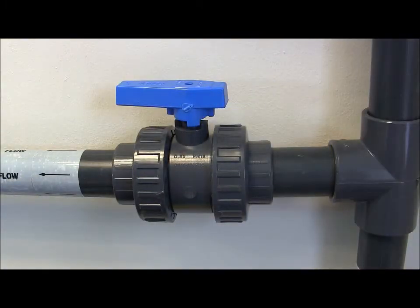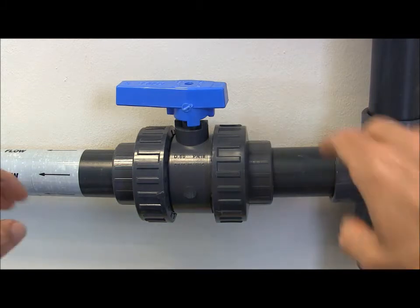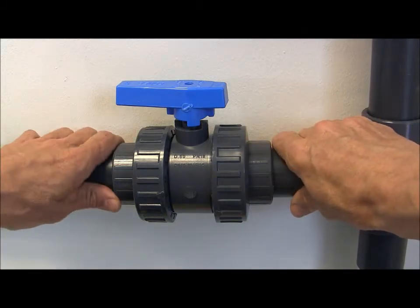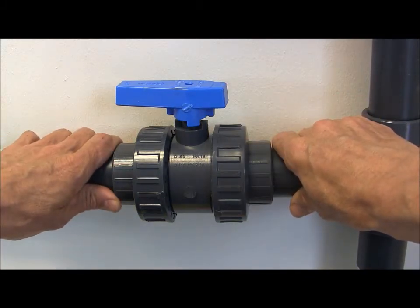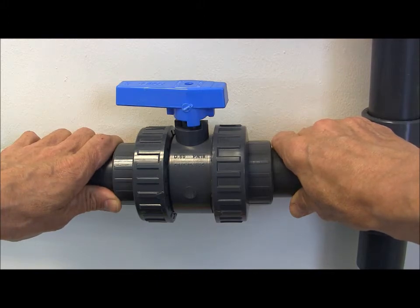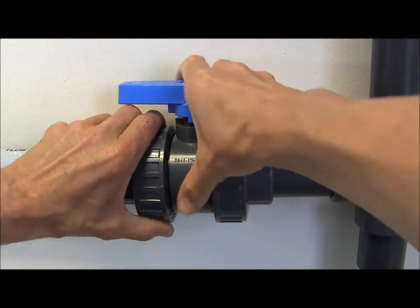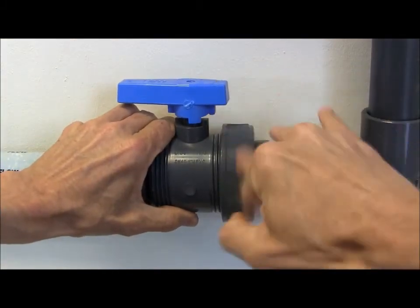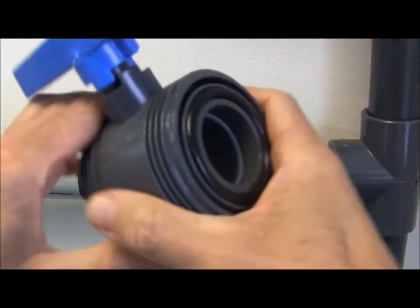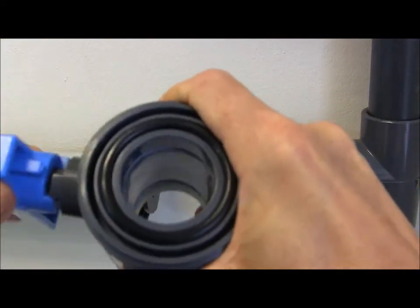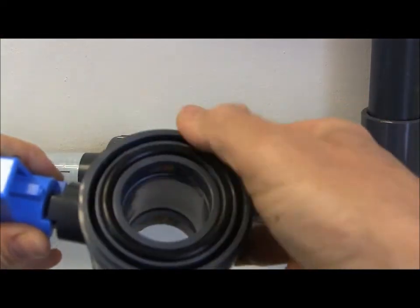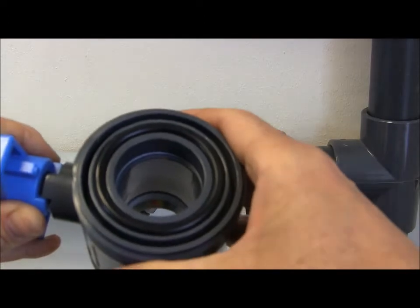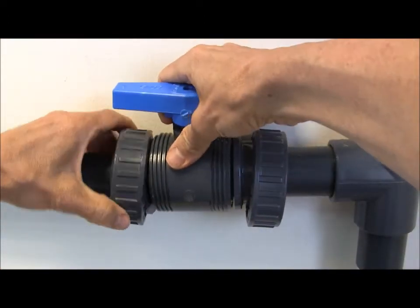Double union ball valves are generally used in pipe systems where there is a fixed pipe coming in and a fixed pipe which is going out from the valve. In this situation if the valve needs servicing or cleaned or if there's a blockage in the line the valve can easily be removed. It can be checked for operation, the seals can be checked. If need be parts can be replaced or indeed the whole valve body can be replaced before reassembly into the line.